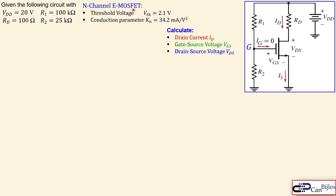For this n-channel E-MOSFET we have the following parameters. The threshold voltage VTH is 2.1 volts — this is the similar parameter to the pinch-off voltage for the JFET. In addition, we have the conduction parameter KN equal to 34.2 mA per square volt. This is a process parameter that depends on the geometry and the MOSFET itself, and designers can use it to achieve a specific current in the MOSFET circuit.